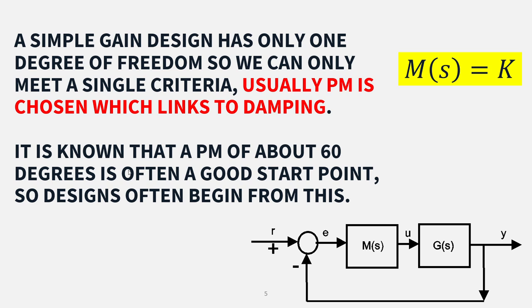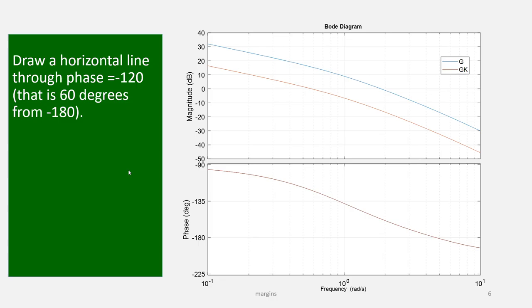A simple gain design has only one degree of freedom, so we can only meet a single one of those criteria, and usually phase margin is chosen which links to damping. Now it's known that a phase margin of about 60 degrees is often a good start point, so designs will often begin from this. It's not always the right answer, but it's usually a good start point.